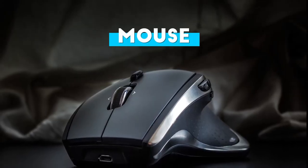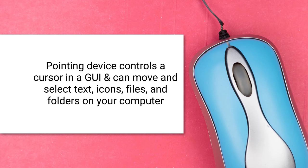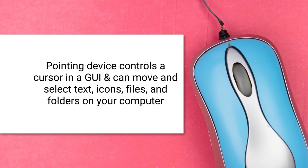The next important input device is the mouse. It is a pointing device which controls the cursor in a GUI — graphical user interface — manner. Earlier most systems were command-line based, requiring commands to instruct the system. But that became tedious, so GUI-based systems evolved where you can use the mouse to select, drag, and give input. Common uses include selecting text, icons, files, folders, opening folders, and selecting properties.